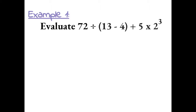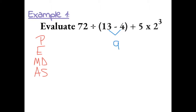Example 1: Let's evaluate the expression by following order of operations, or PEMDAS. I put multiplication and division next to each other and addition and subtraction next to each other, so we can remember that we do whichever one comes first from left to right. First, we need to do parentheses: 13 minus 4, which gives us 9.